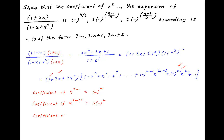Similarly, the coefficient of x raise to the power 3m plus 2 is equal to the product of the coefficient of x square in the first component, multiplied by the coefficient of x raise to the power 3m in the second component, and this is equal to 2 times minus raise to the power m.